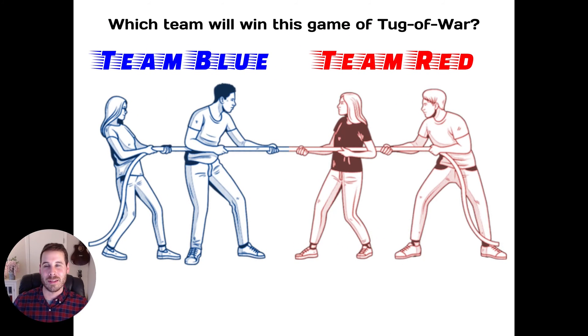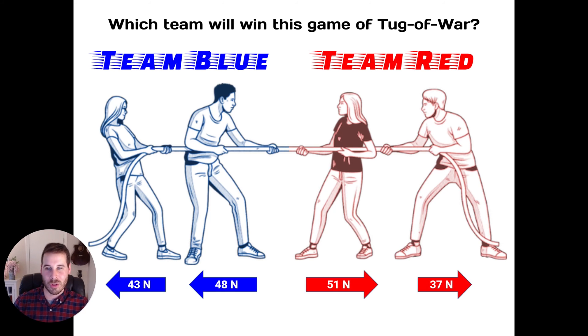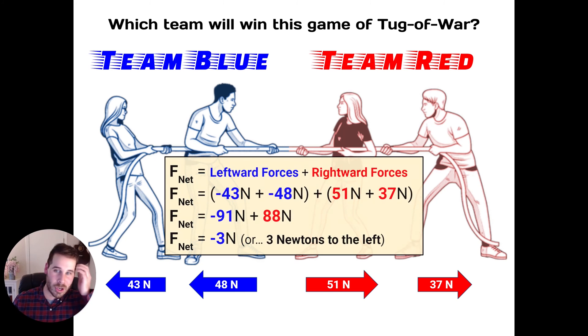I want to give you one last problem to consider with multiple people pulling on one object. The question is which team is going to win this game of tug of war? Is it team blue or team red? Well, obviously it depends on how strong each of these people are. So let's assume that at the moment we begin the tug of war game, these are the forces that each of these candidates is putting out. So which team is going to win? Well, it depends on who's strongest, right? So out of these numbers, I see 51 is the biggest number. So the woman on the right is exerting the strongest force on the rope. So wherever the rope goes, that's who's going to determine who wins and she's the strongest. So I'm guessing team red is going to win, but let's actually do the analysis and make sure.